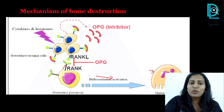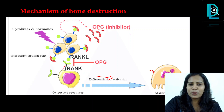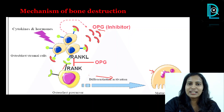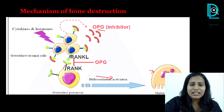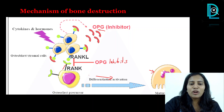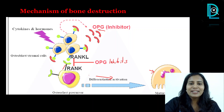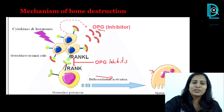Now there is one more ligand — OPG, or osteoprotegerin. When OPG binds to RANK, it inhibits this process, thereby stopping the differentiation of the precursor into a mature osteoclast, and putting a stop to bone loss.